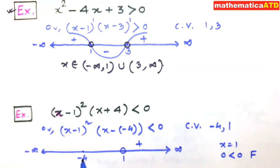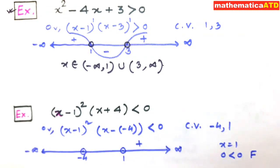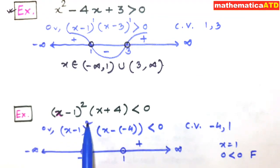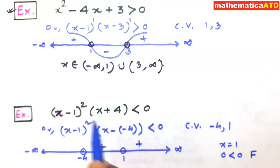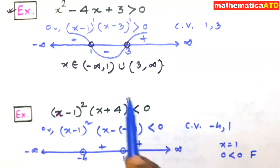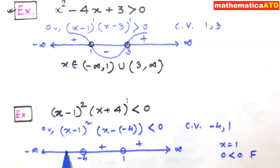We also discard minus 4 because the inequality sign is strictly less than — there is no equality sign, so that point is excluded too. Now, the critical point 1 corresponds to factor (x - 1) with even power 2, so there is no sign change — the positive sign is retained. The critical point minus 4 corresponds to factor (x + 4) with power 1, which is odd, so we change the sign from positive to negative.